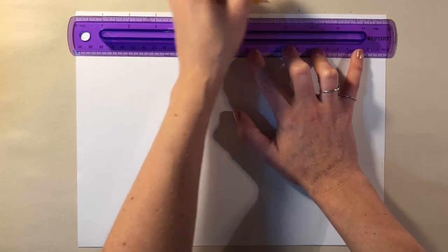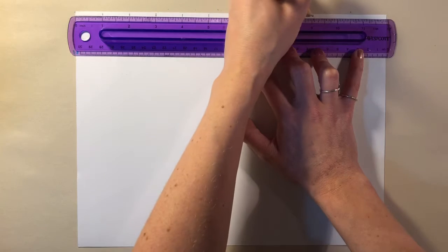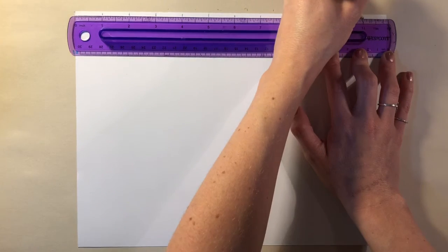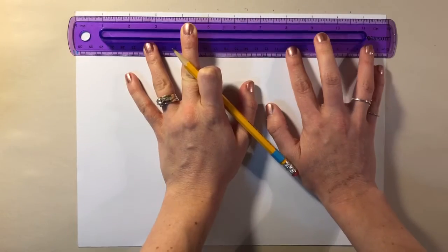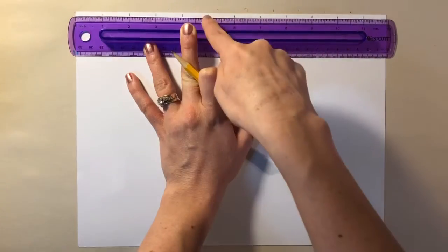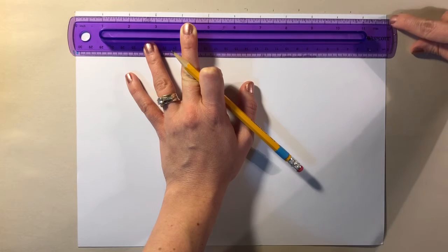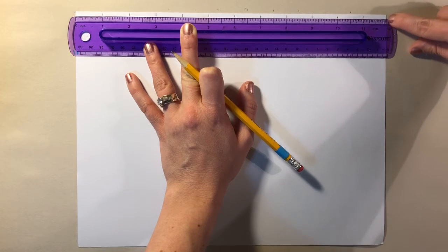Now I have created my tick marks all the way across, all the way over to my 11. My paper is actually just a smidge smaller than 12 inches, but I think that's just because it came from the manufacturer that way.